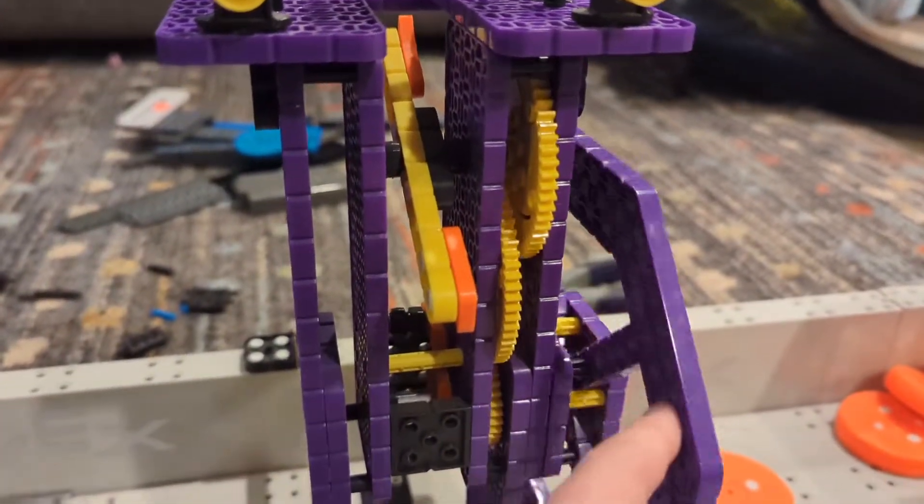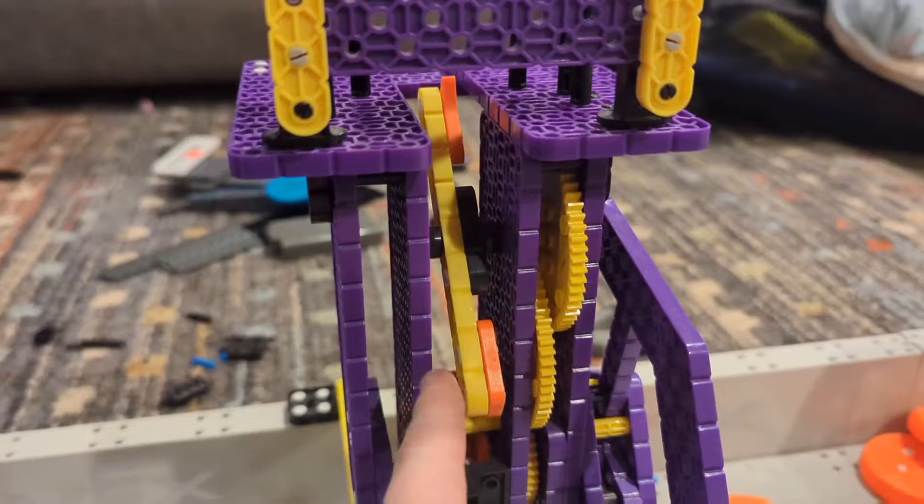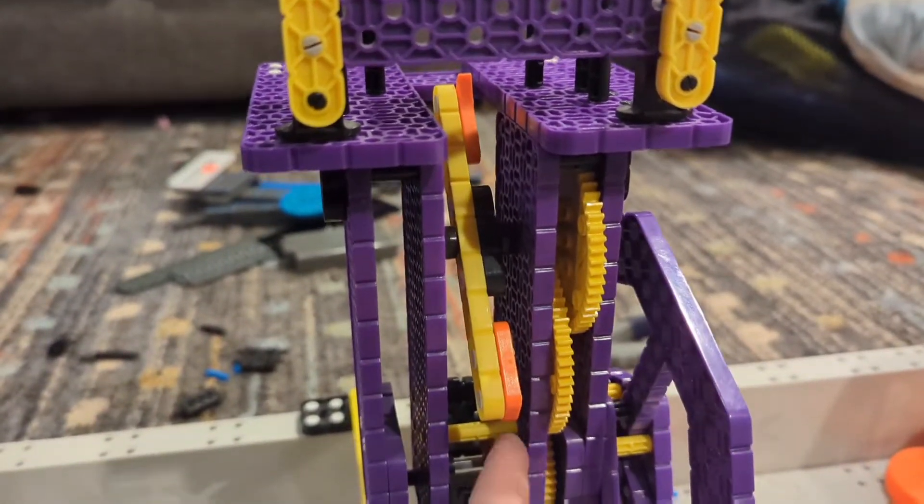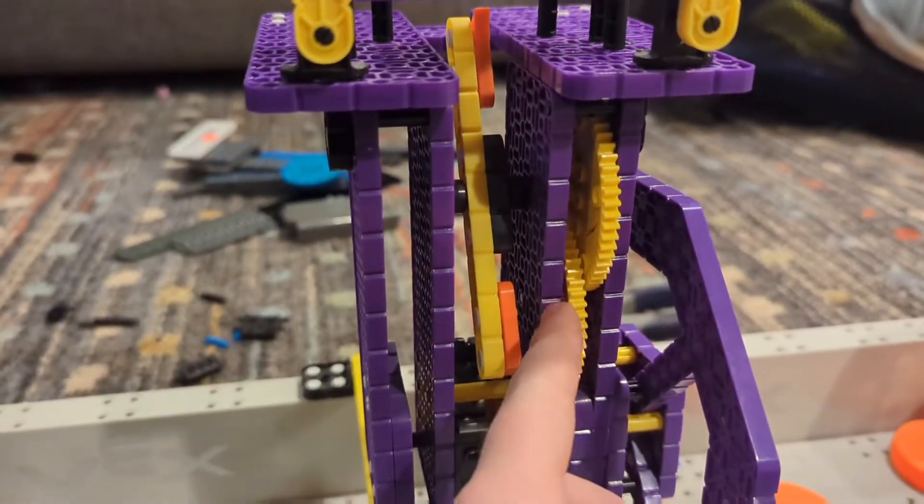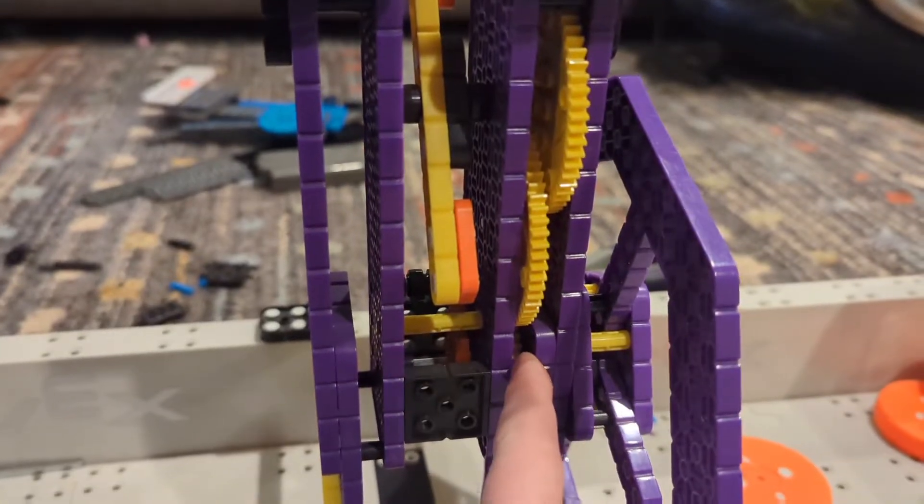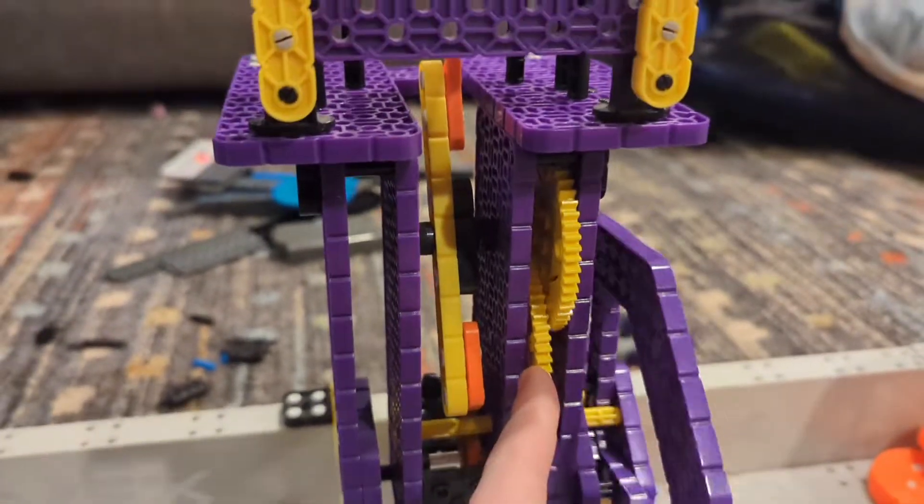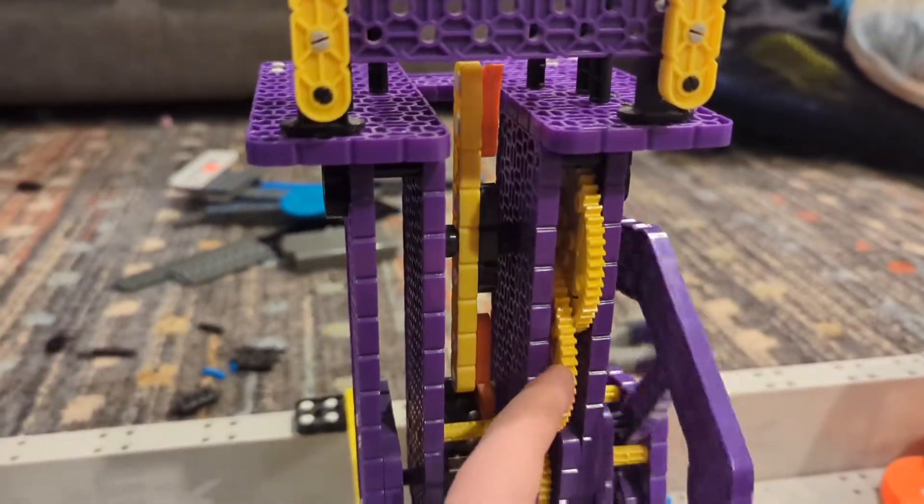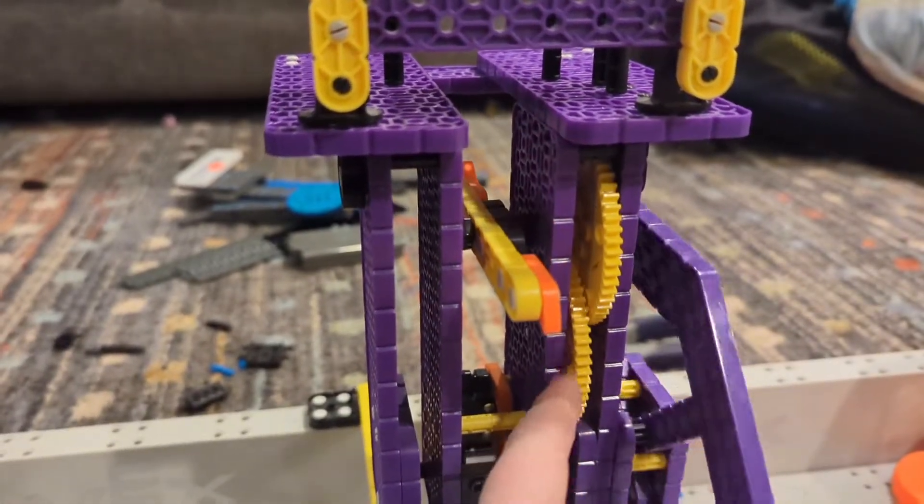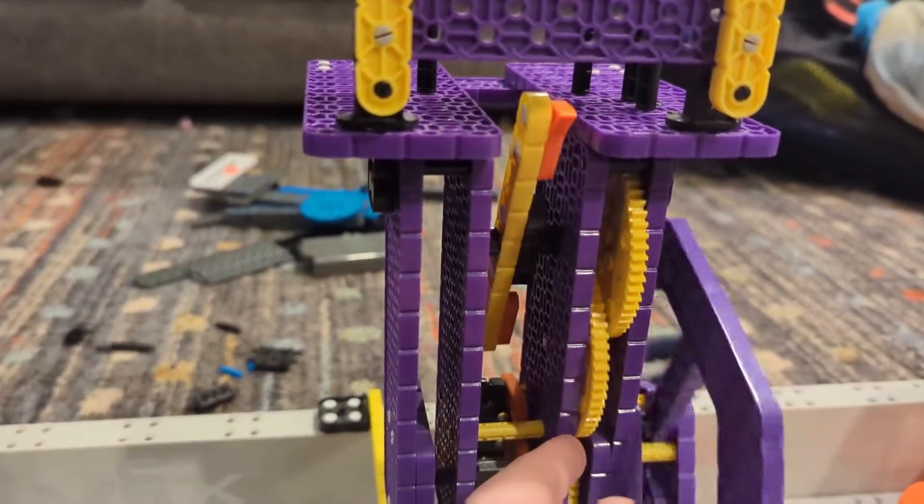So whenever you spin this around one time, it's not spinning this around one time. And so whenever you spin this, you're basically bypassing this gear right here. So it's going to be way faster, because every time you turn this, you're getting a lot more out of it.